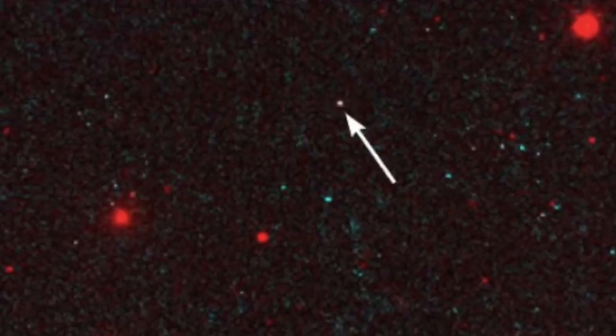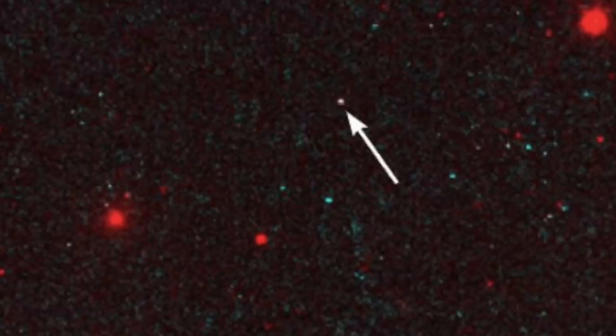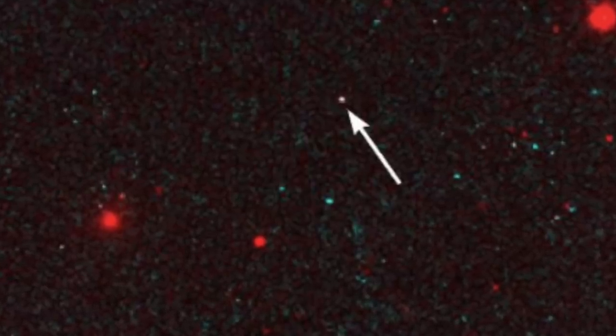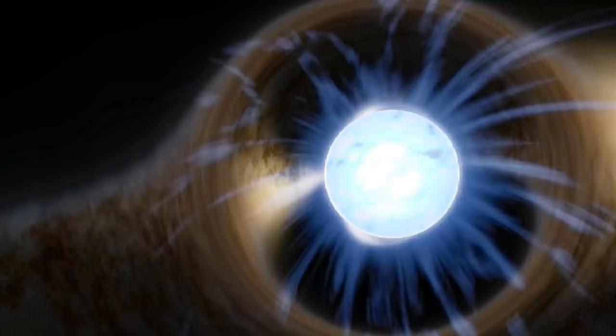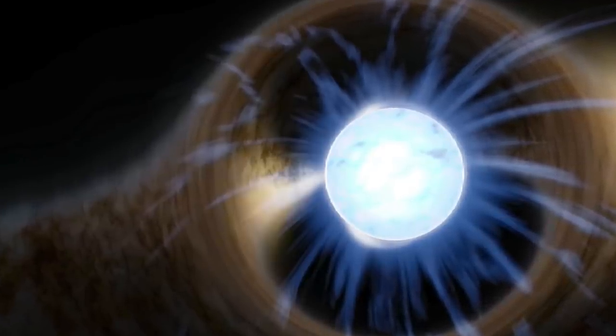On the 14th of August 2019, giant detectors in the US and Italy picked up on gravitational waves, and these were set off when a black hole and a neutron star collided around 900 million light-years away. The researchers have seen a lot of merger of black holes and neutron stars, but never with each other.